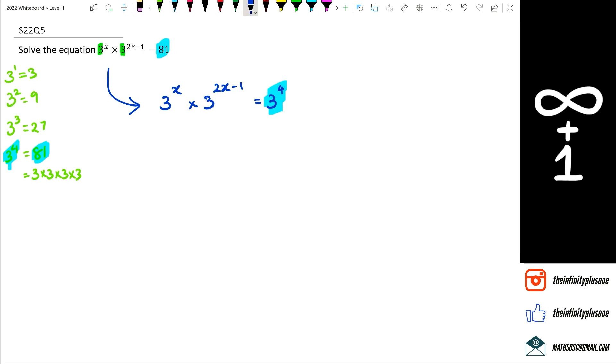Now once we do that, our next step is that we've got two bases that are the same, and because the bases are the same, we can add the powers together. Because remember, if you have something like 3 squared multiplied by 3 to the power of 3, we would write this as 3 to the power of 2 plus 3. Based on that idea, we're going to do the same thing here. Because the bases are the same, we're going to add the powers together. So we've got 3 to the power of x plus 2x minus 1 equals 3 to the power of 4.